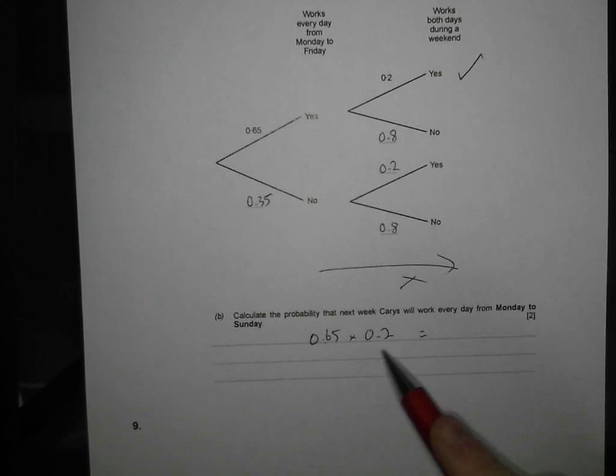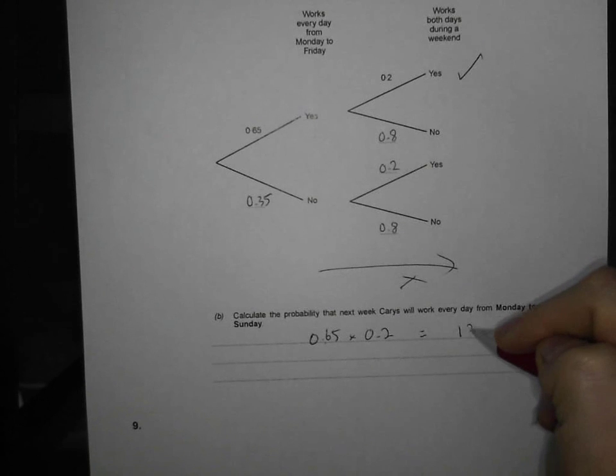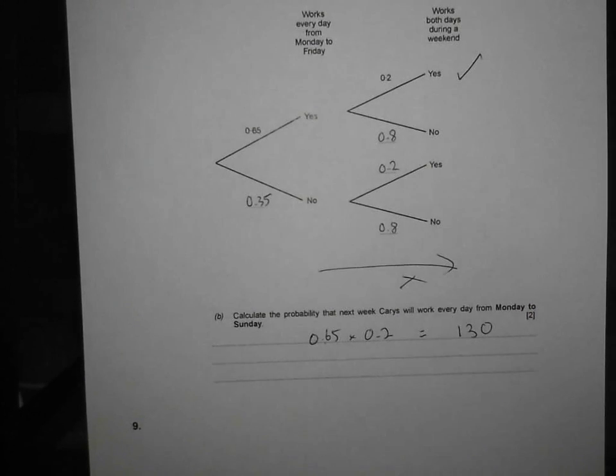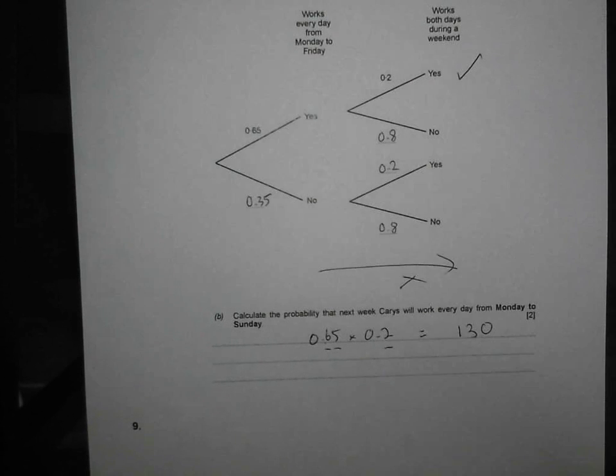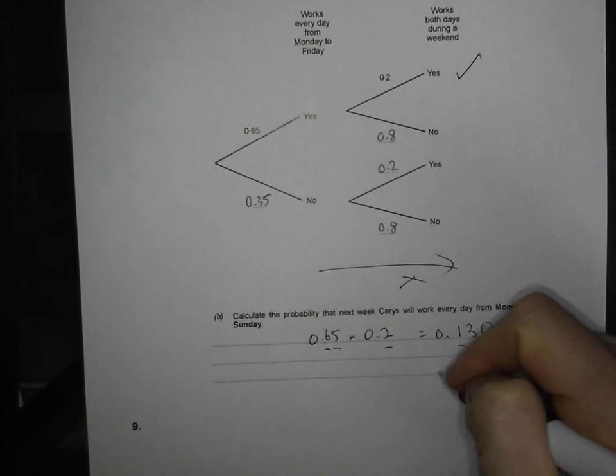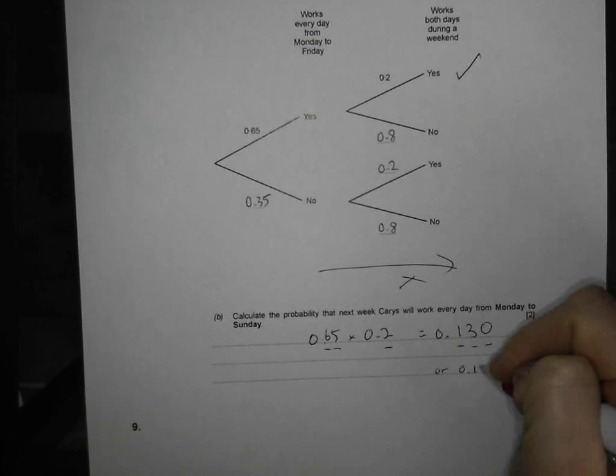I say 65 times 2 is 130. And then I've got 1, 2, 3 numbers in the question that are after the decimal point. So, I've got to make sure I have 3 numbers in the answer that are after the decimal point. So, my answer must be 0.130 or 0.13.